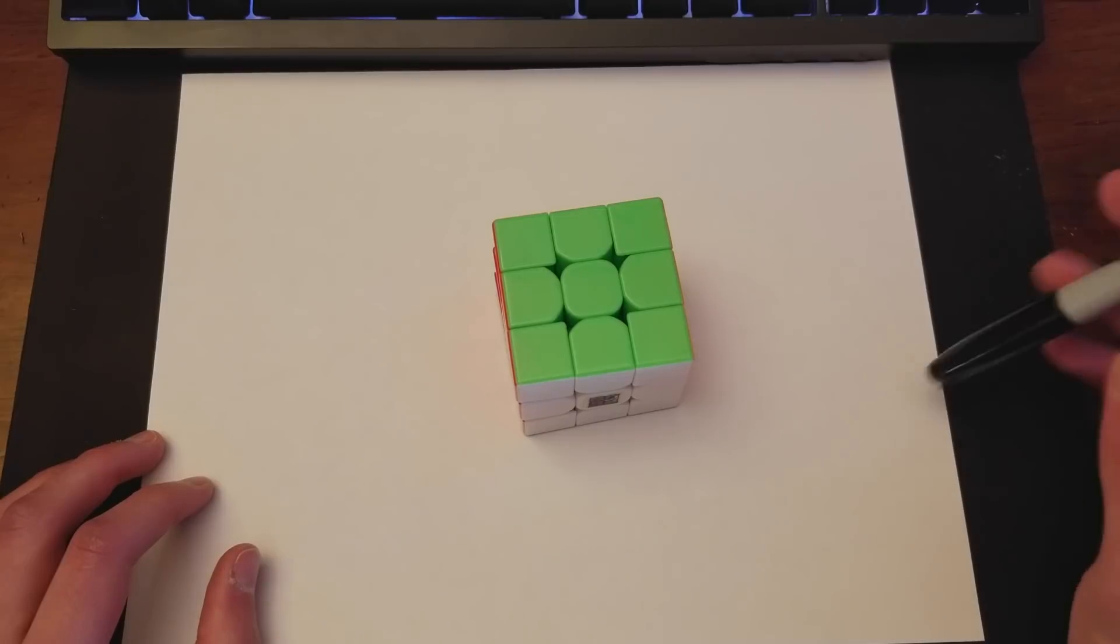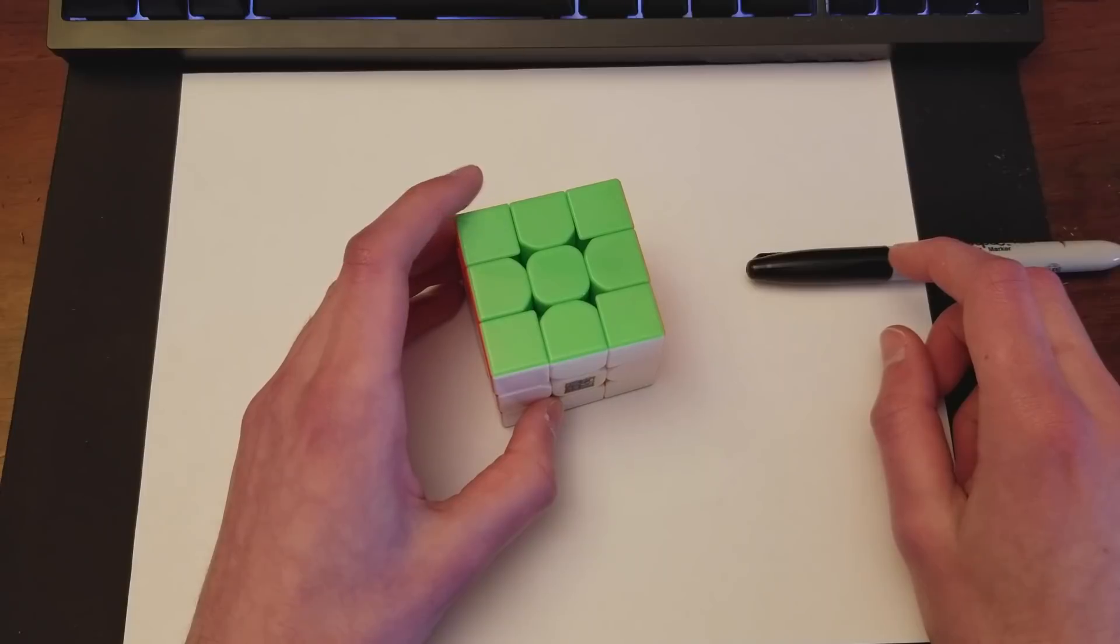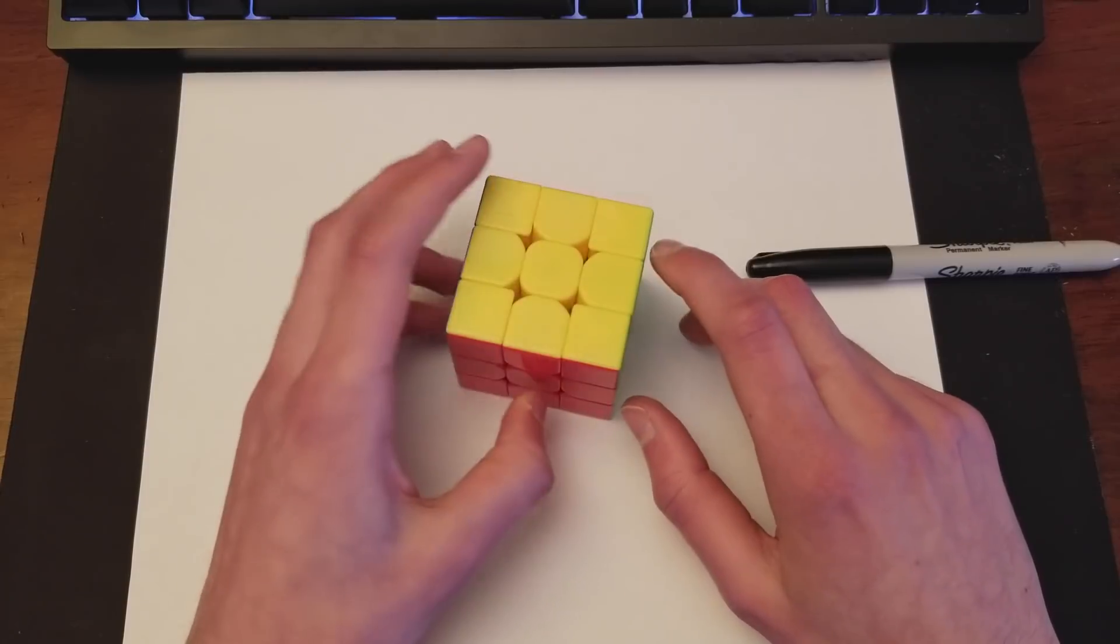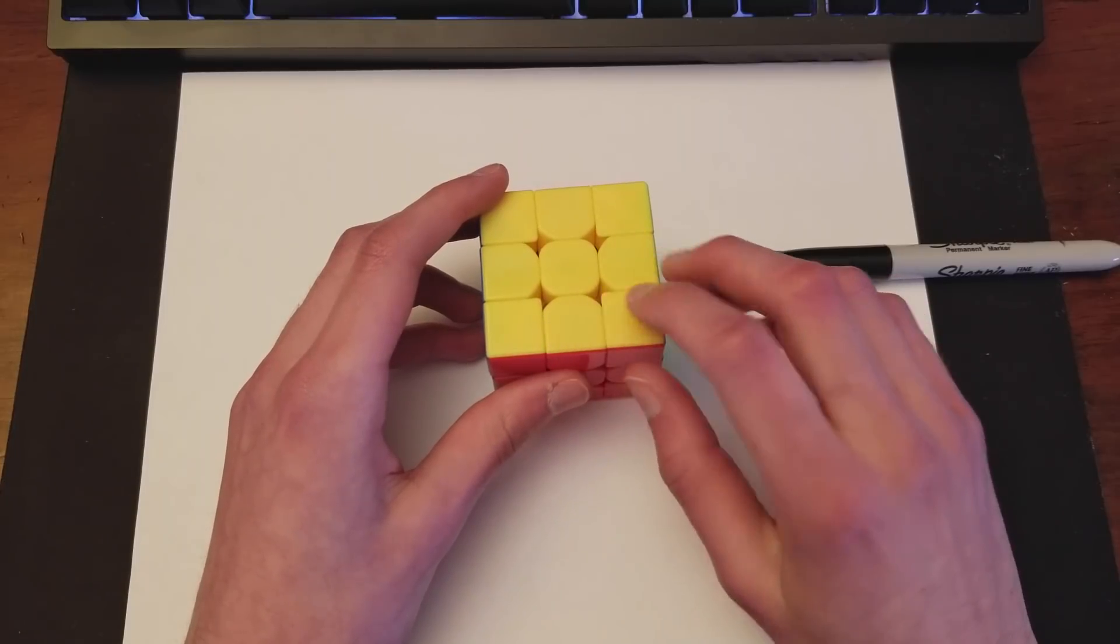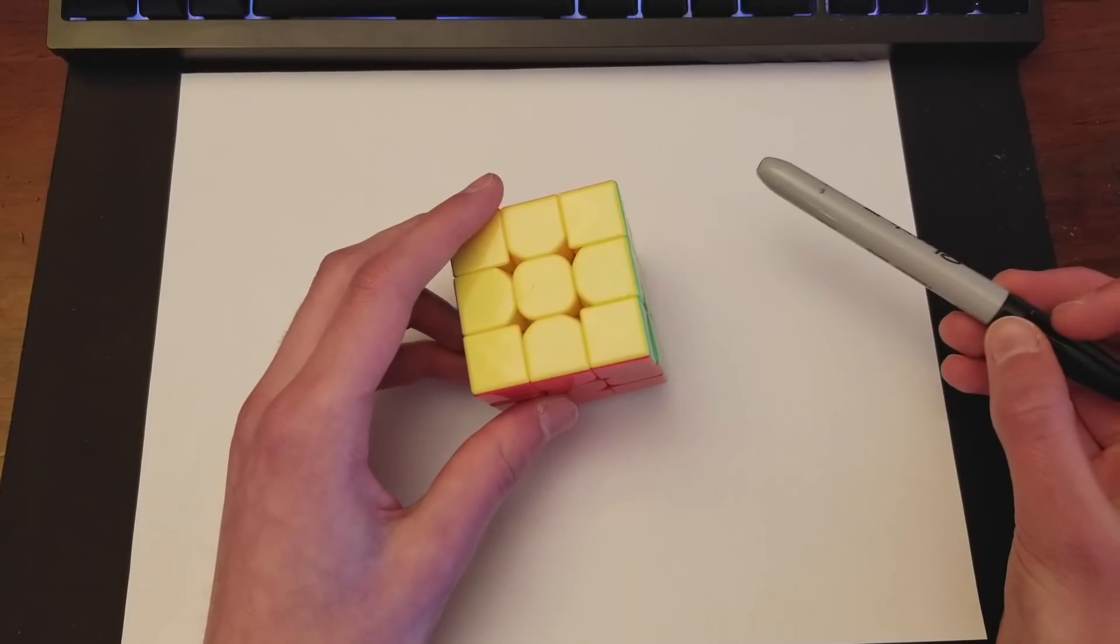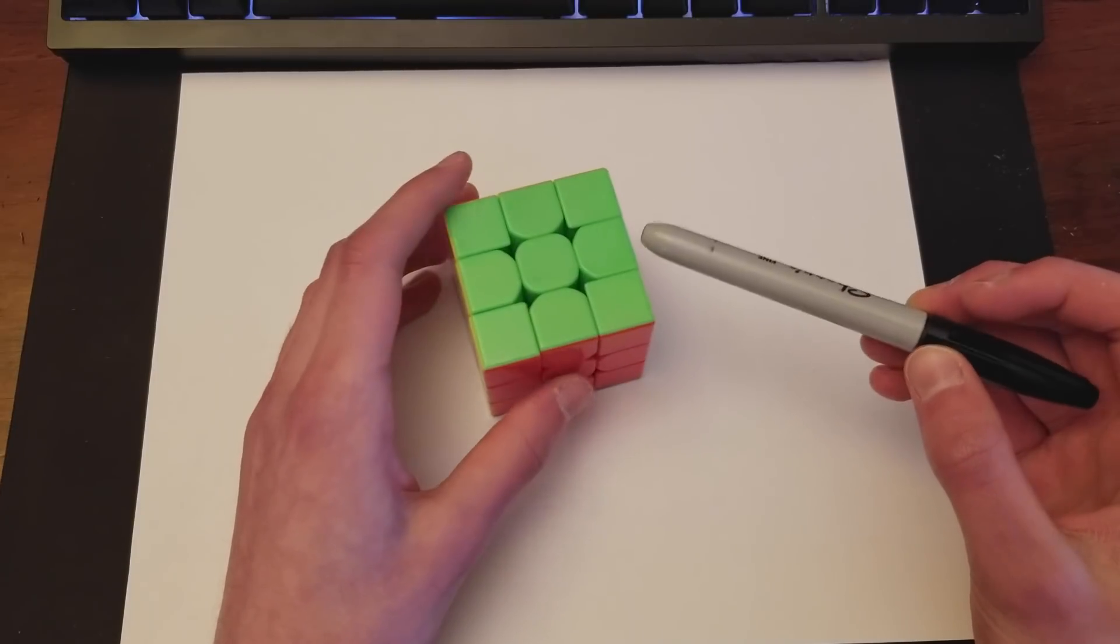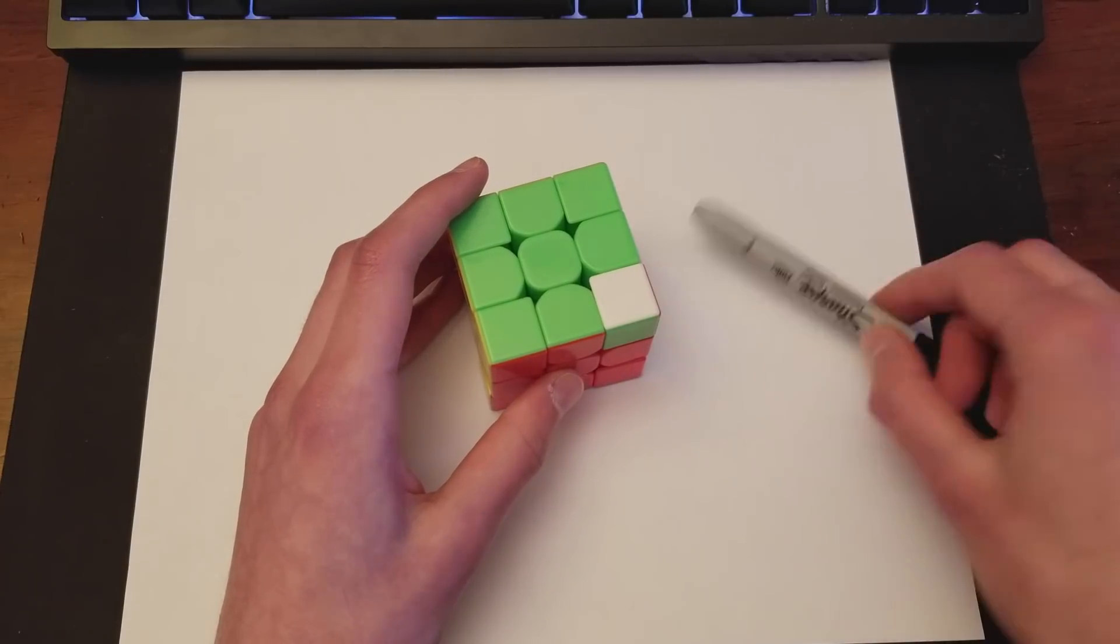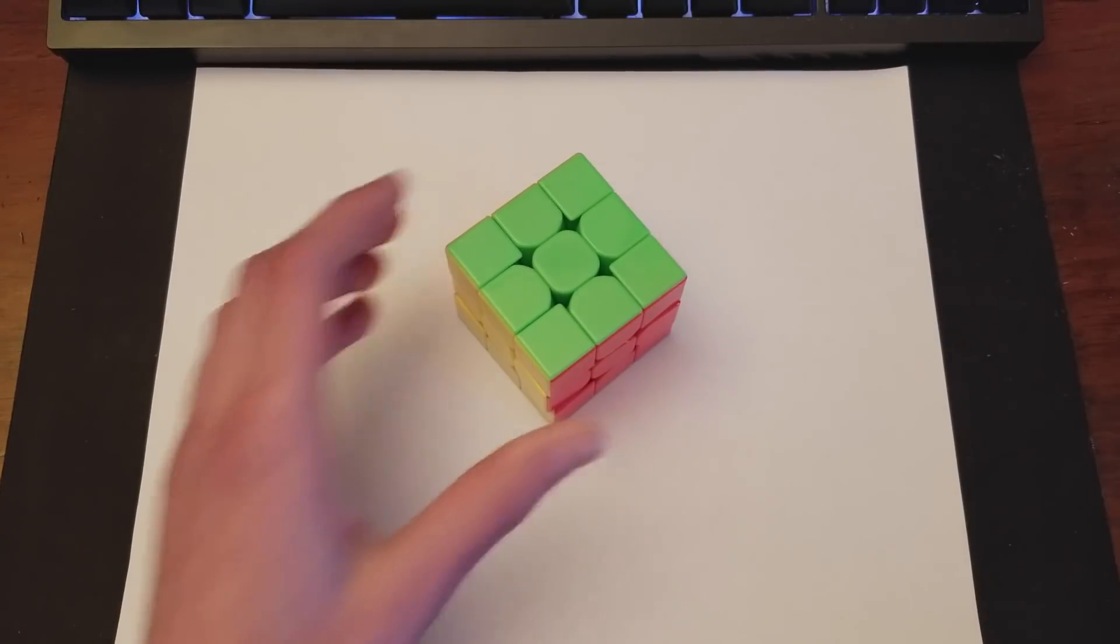So 43 quintillion is quite large and where that originates from is the orientation and permutation of each individual piece. So basically you've got corners and edges on the three by three. You got to account for each possible orientation and permutation. Another thing is you cannot overcount.